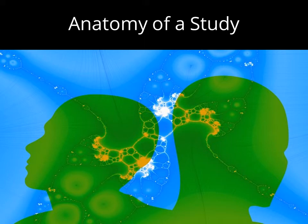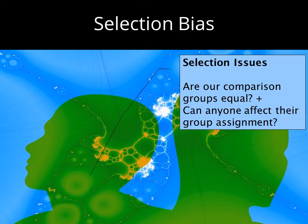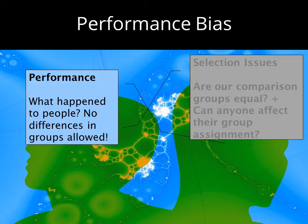I will talk about a few of the biases here, but you really want to spend time looking at the two tools I suggested you download to get a bigger picture of all the various biases to look at. A prime consideration in selection bias is whether the groups being compared are actually alike, and another important consideration is how people are actually assigned to their study groups. There are many things to consider when evaluating performance bias.